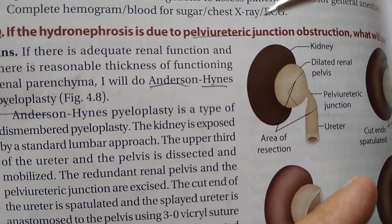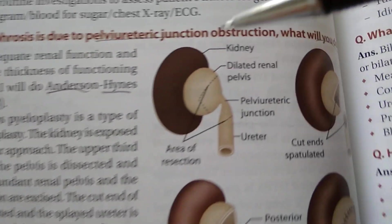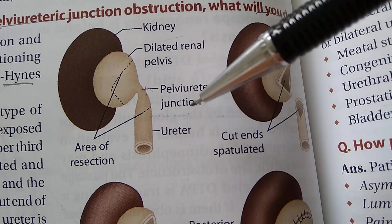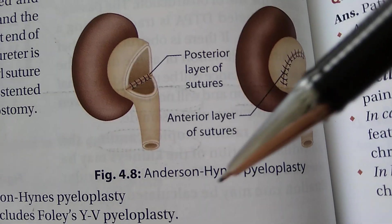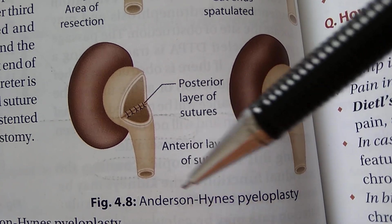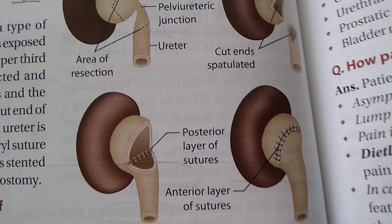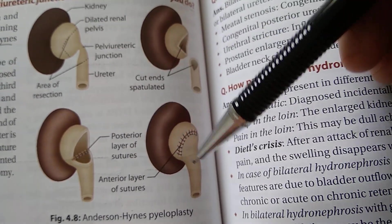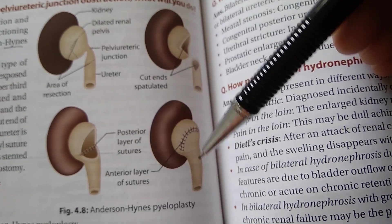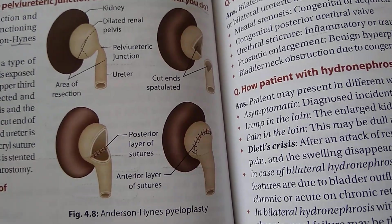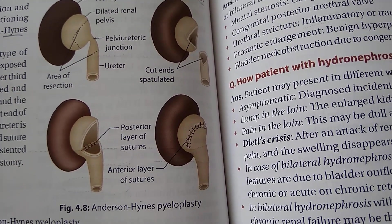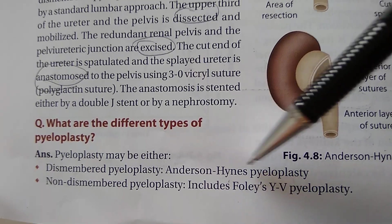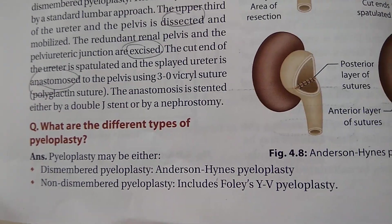The next viva question: if the hydronephrosis is due to a pelvi-ureteric junction (PUJ) obstruction, what will you do? There is a dilated renal pelvis because of the PUJ obstruction. The answer is Anderson-Hynes pyeloplasty — they remove the obstructed segment and bring the unobstructed part up. This is a type of dismembered pyeloplasty. Non-dismembered pyeloplasty refers to other types.